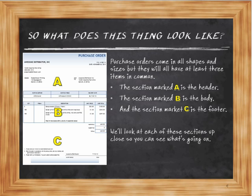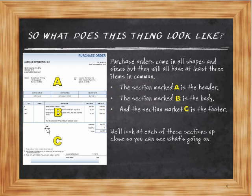This is what a purchase order looks like. I just went and got this — it's a free purchase order. I'm using the new version of Microsoft Word, went to create a new document, and searched for a purchase order template and found one. Purchase orders come in all different designs, shapes, and sizes. If you work with a larger company you might have a standardized template. If you're an independent you probably need to come up with your own. But every PO will have three different sections — I've called them A, B, and C. A is the head of the PO, B is the body, and C is the footer.